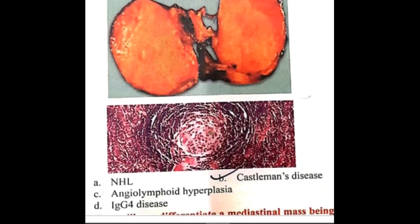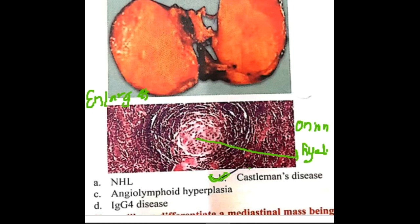In this picture you will see the hyaline vascular type, where there is a B cell follicle with mantle zone expansion showing an onion skin pattern, and in the center you will see hyaline vascularity. This is a picture of an enlarged lymph node showing the onion skin pattern with increased vascularity. This disease is Castleman disease, also called giant lymph node hyperplasia or angiofollicular lymph node hyperplasia.